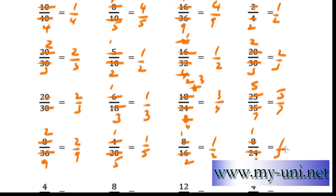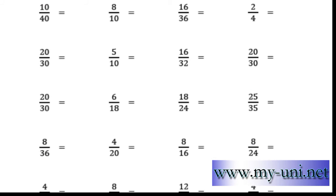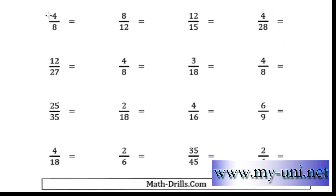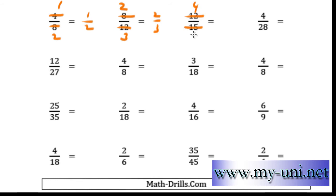Now we have to move down. 4 times 1 is 4 and 4 times 2 is 8, so 1 over 2. Then 4 times 2 is 8 and 4 times 3 is 12, giving 2 over 3. Then 3 times table: 3 times 4 is 12 and 3 times 5 is 15, so 4 over 5 is the simplified form. Then 4 times 1 is 4 and 4 times 7 is 28, so 1 over 7 is the answer. 3 times 4 is 12 and 3 times 9 is 27, so 4 over 9 is the answer.